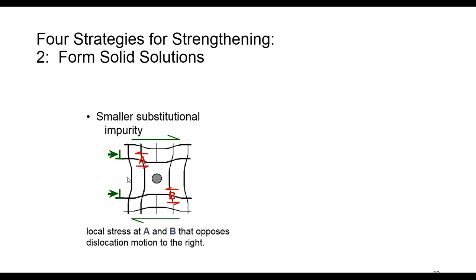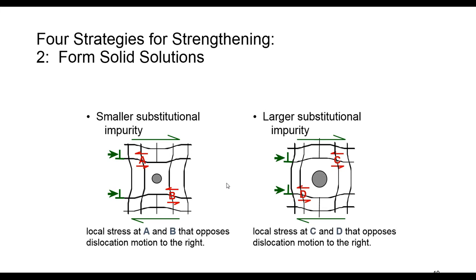If we have a smaller substitutional impurity atom, like this shape, of course, we will have tensile lattice strain here and here. And if we have larger substitutional impurity imposed to the host molecule, then we have compressive strains imposed on host atoms. And again, you see that these local stresses again oppose the motion of the dislocation as shown here.